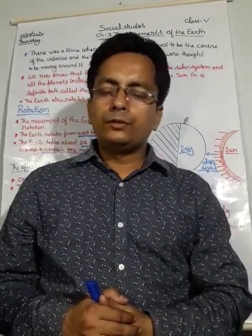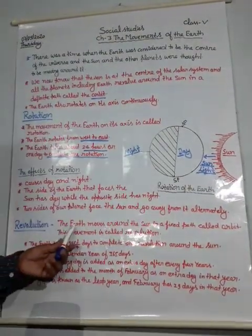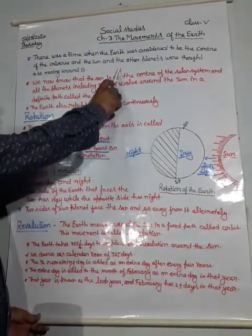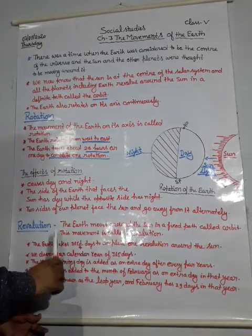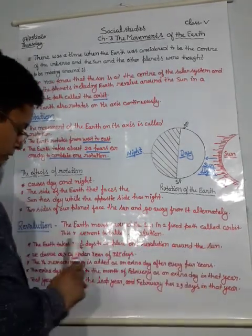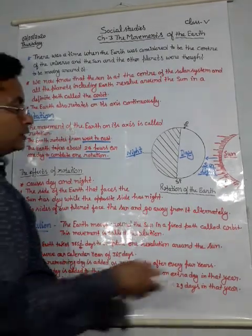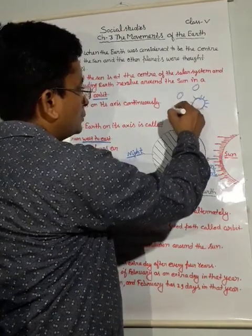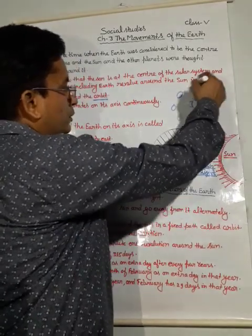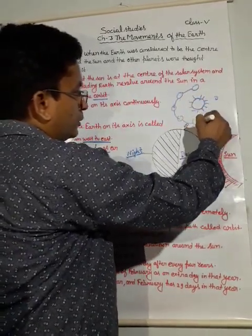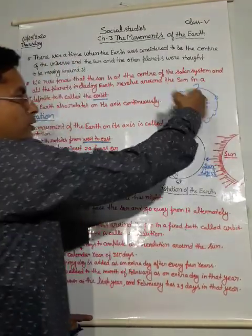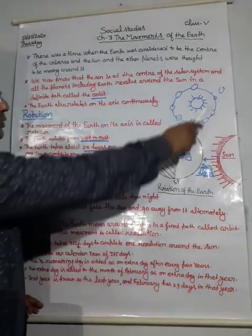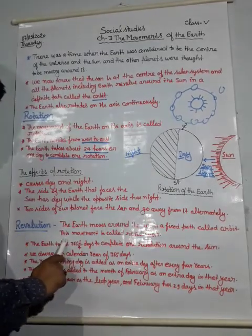The other movement of the earth is revolution. The earth moves around the Sun in a fixed path called an orbit — as we discussed already. This movement of the earth around the Sun in its fixed orbit is called revolution.